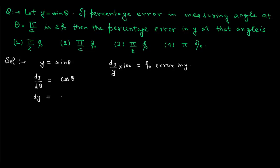From dy/dθ = cos θ, we can write dy = cos θ · dθ. Now divide this equation by y, which is sin θ. We have now got dy/y, which is (cos θ / sin θ) · dθ. That is the desired form for calculation, but the problem is that the right-hand side has only dθ, whereas the question gives us the percentage error in θ, which is 2%.